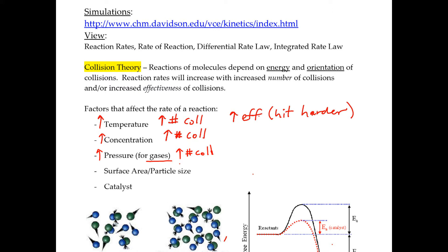With surface area, you want to increase the surface area to increase the rate, which means you would have to decrease the particle size. You want smaller pieces and that's going to expose more of the substance. That will again increase the number of collisions. It will not increase their effectiveness — they're not going to hit harder, they're just going to hit more often.